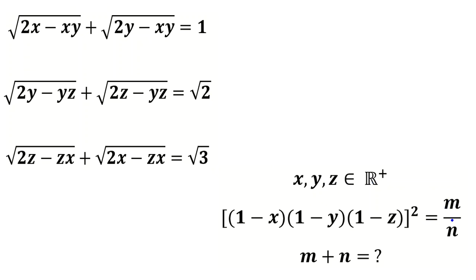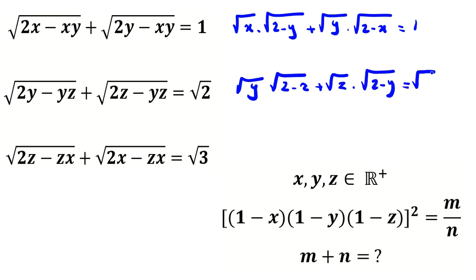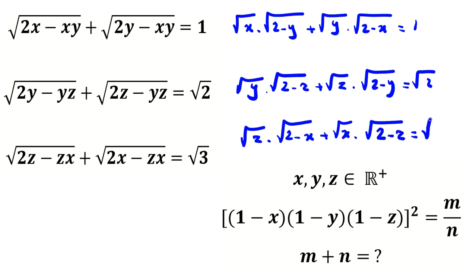We want to find this expression in the form m over n, where m and n are relatively prime, and find m plus n. We factor from x in the first equation: root(x) times root(2 - y) plus root(y) times root(2 - x) equals 1. For the second: root(2 - z) plus root(z) times root(2 - y) equals root(2). And the last: root(z) times root(2 - x) plus root(x) times root(2 - z) equals root(3).